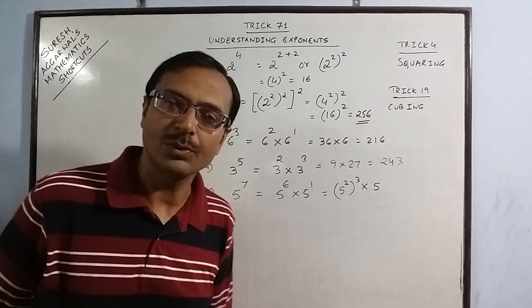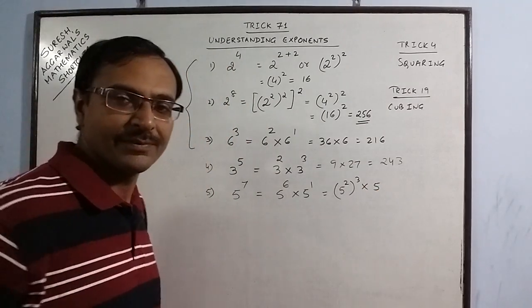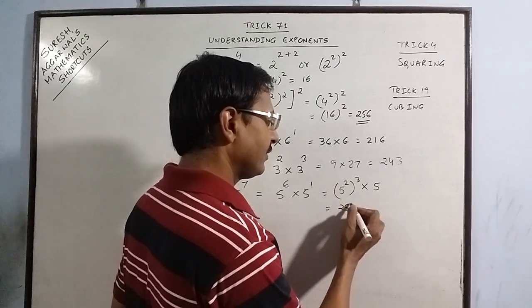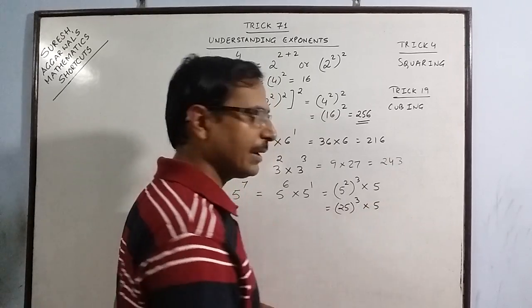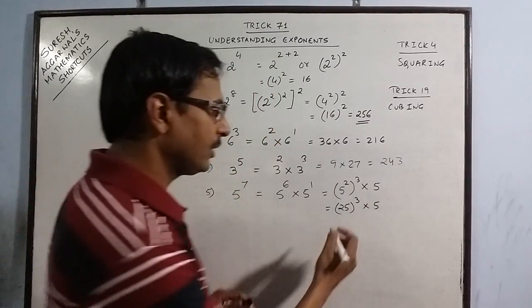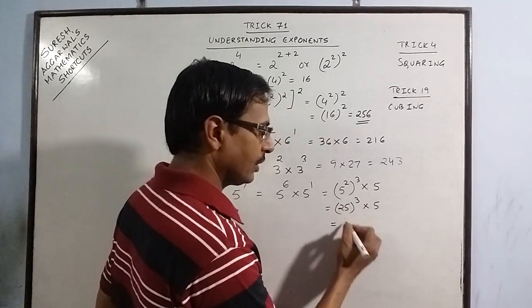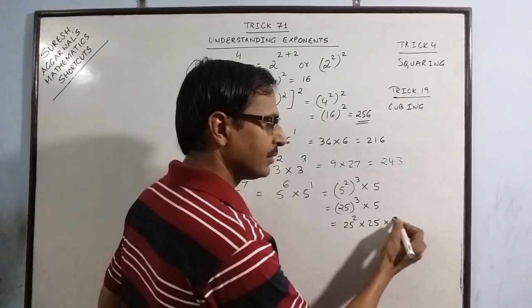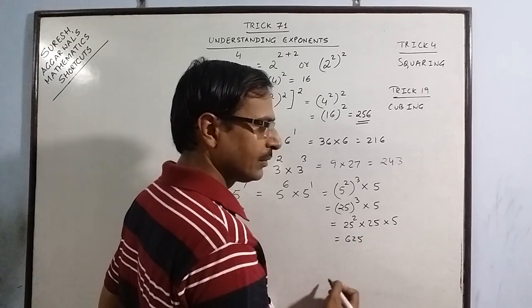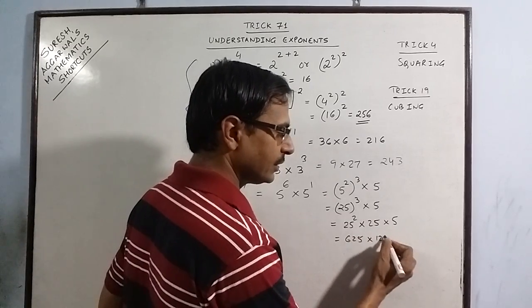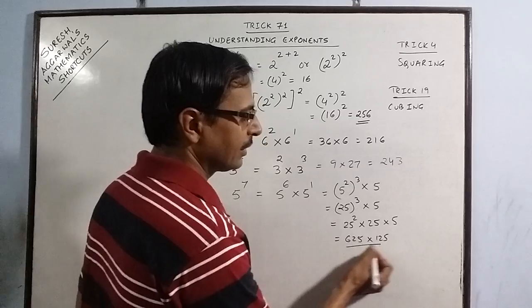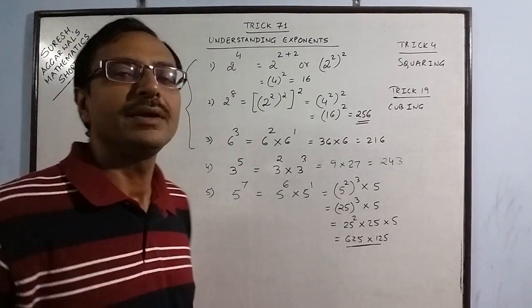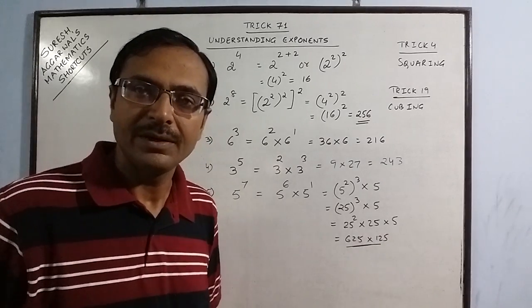There are so many methods through which you can find 5 raised to power 6. Just break down. 5 raised to power 2 is 25. Now you have to cube 25, then multiply by 5. For cubing, you need to find the product of 25 square and 25. 625 into 125. Now you are left with finding only one product, 625 and 125. All these steps which I have written can be done in mind.